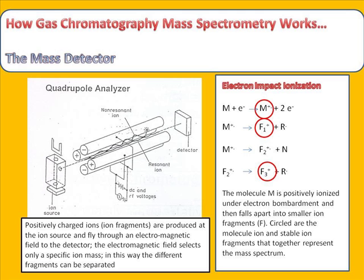The molecule ion and the stable ion fragments are detected by the quadrupole mass analyzer. This happens in the way that particular ions with a specific mass fly through these four rods, as you can see in the left figure. There is an electromagnetic field established between these quadrupole rods, and this electromagnetic field will only let one particular ion fragment with a very specific mass through at a time. In this way, particular ion fragments, or the entire group of ion fragments, can be monitored.